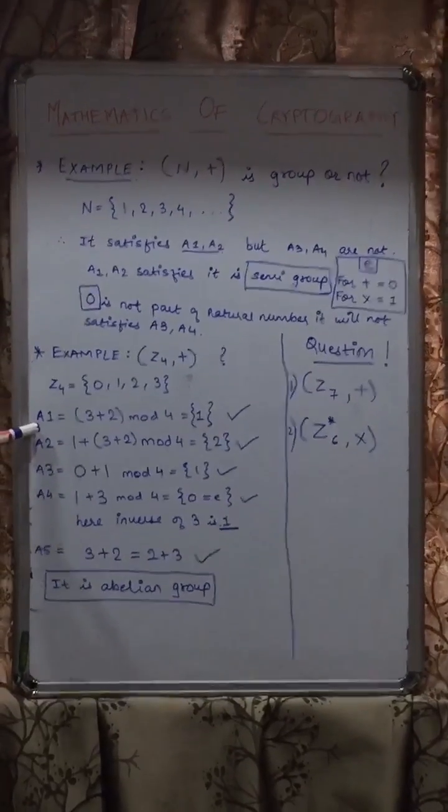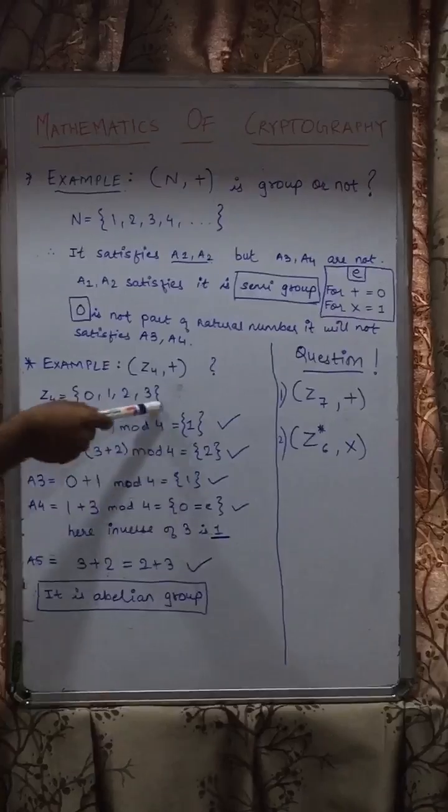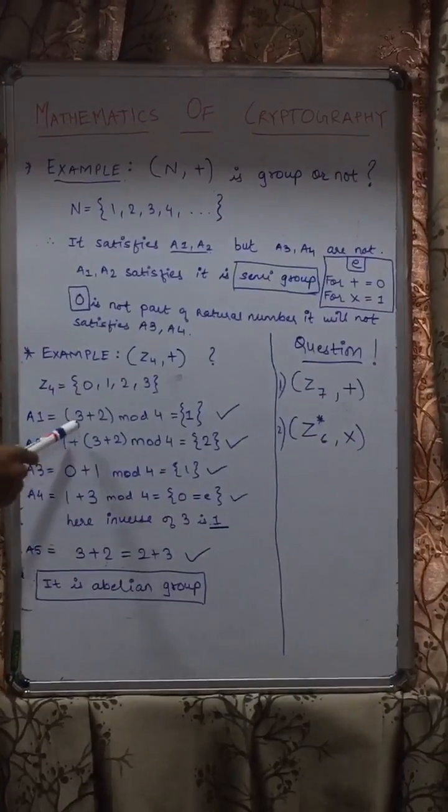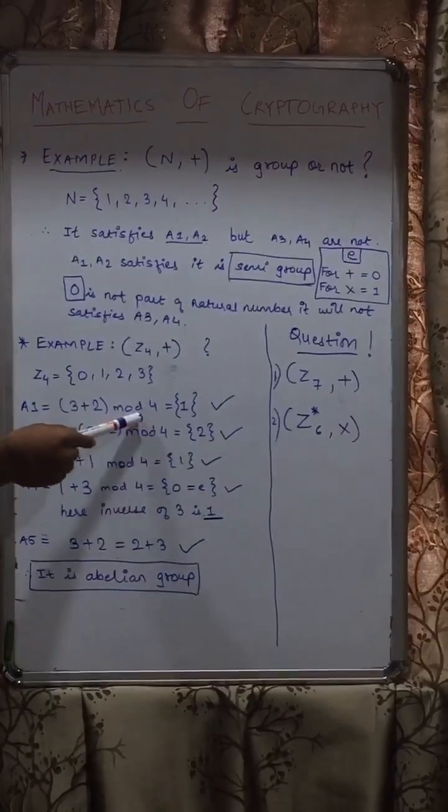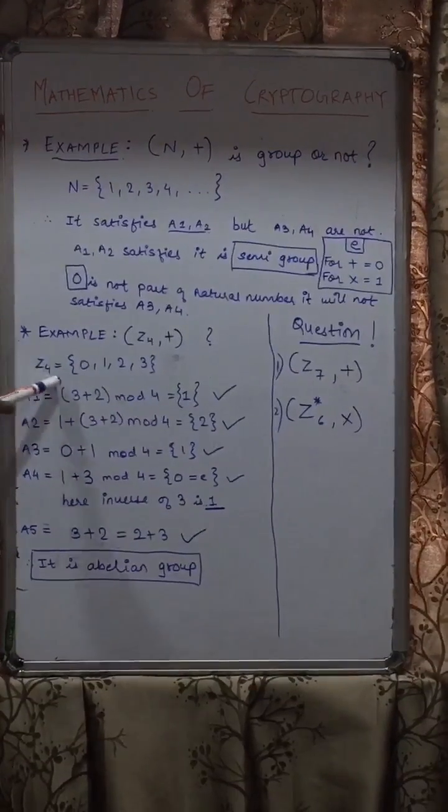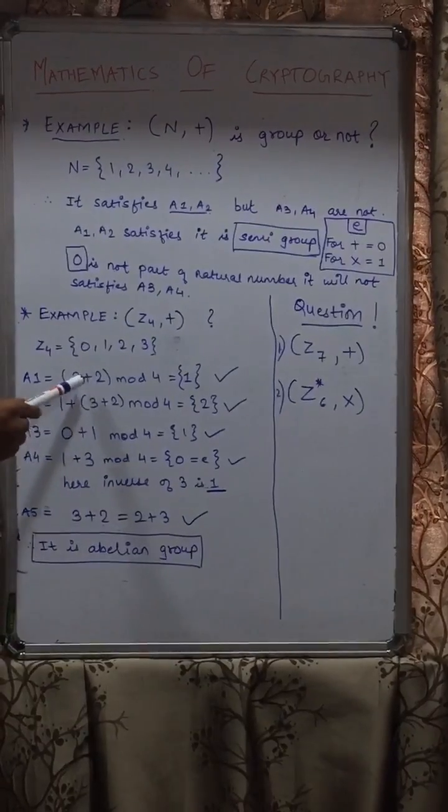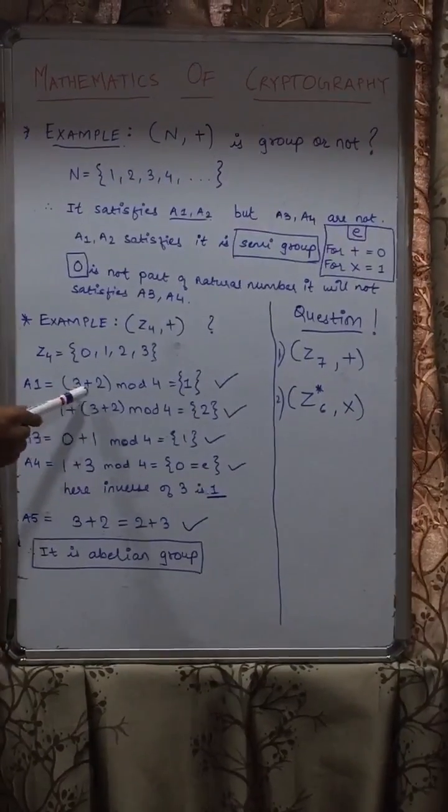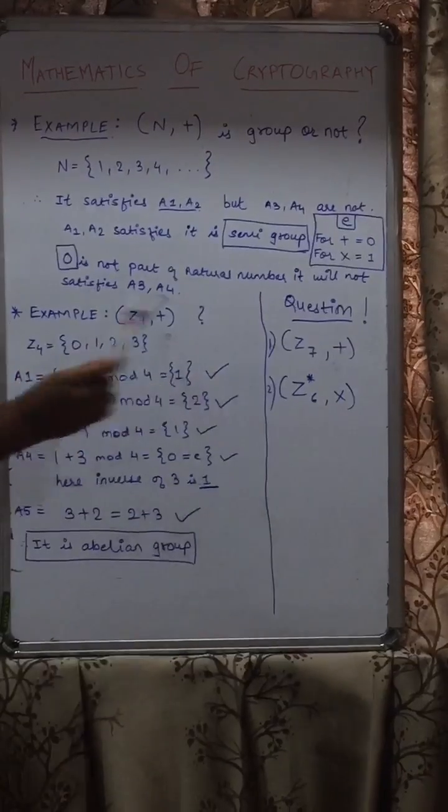So for this, now we check all the properties. A1 property which is closure property. In this set, in this domain only, we have to take our numbers. So we choose 3 + 2 and we also have to do the modulus of the Z number which we have used in our example. So the numbers we choose for a and b are 3 and 2. So 3 + 2 = 5 mod 4 gives 1. 1 is in our domain, so it satisfies.